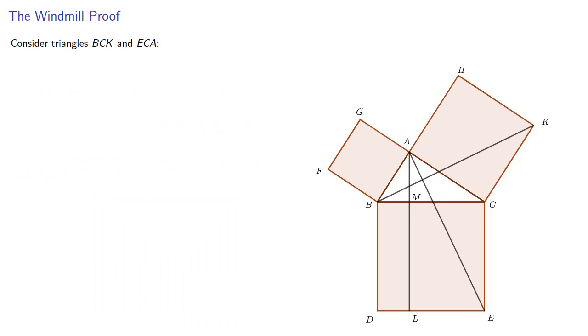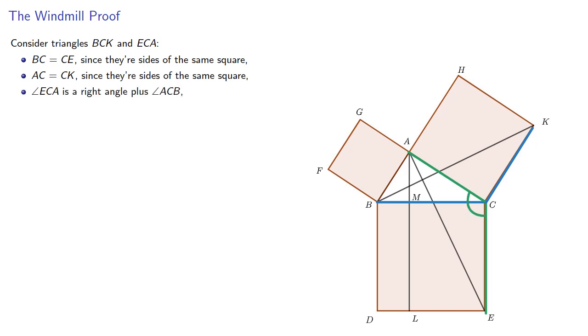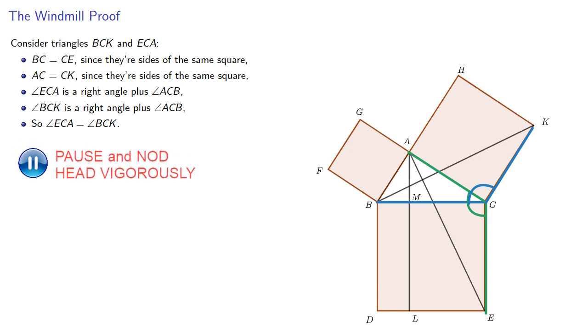So let's consider the triangles BCK and ECA. BC is CE since they're sides of the same square. AC is CK since they're sides of the same square. And angle ECA is a right angle plus angle ACB, BCK is a right angle plus angle ACB, so angle ECA equals angle BCK. So we have two sides and the included angle of one triangle equal to the two sides and included angle of another triangle, so triangles BCK and ECA are equal.